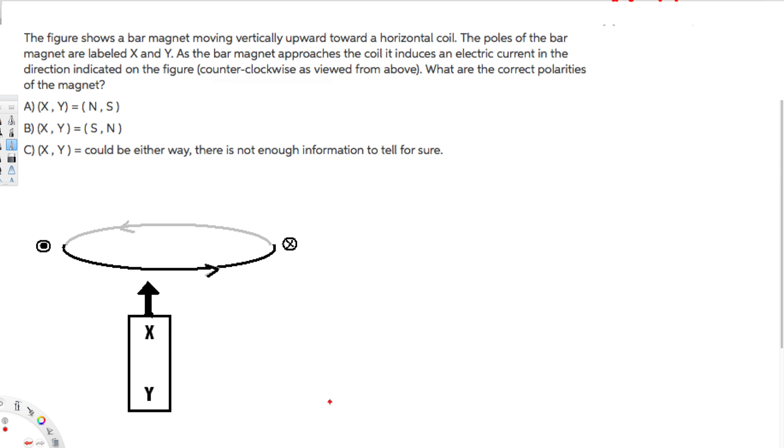Hey, what's going on guys, let's do this problem right here. This question is asking: the figure shows a bar magnet moving vertically upward toward a horizontal coil. The poles of the bar magnets are labeled X and Y. As the bar magnet approaches the coil, it induces an electric current in the direction indicated on the figure. What are the correct polarities of the magnet? Now let's see how we can find it.